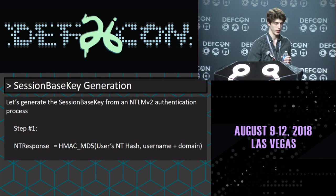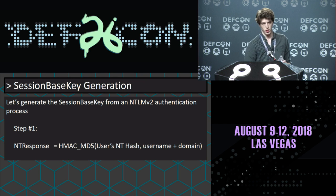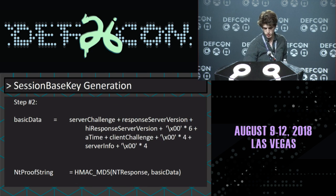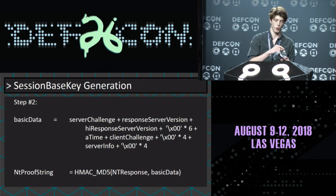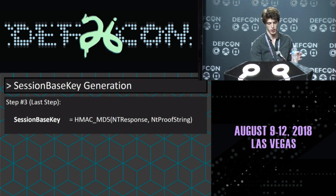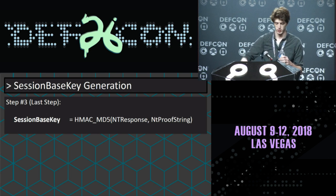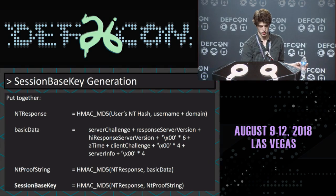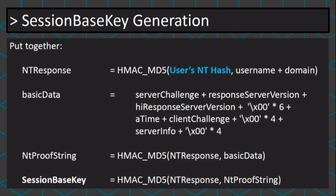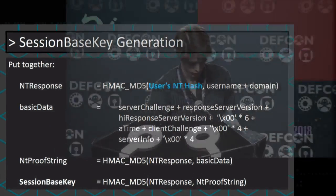Let's walk through generating those session-based keys. Step one: we need the NT response — that is the user's NT hash converted from plaintext. Step two: we take all the information from the server challenge, combine it, and use the HMAC algorithm with that NT hash. Then we have our session-based key, which is the NT response hashed again — your password hashed, hashed again, in addition to all that server information. The key takeaway: the only information we don't have in this exchange is the user's password. To generate the keys that protect all SMB sessions, we just need the user's password.